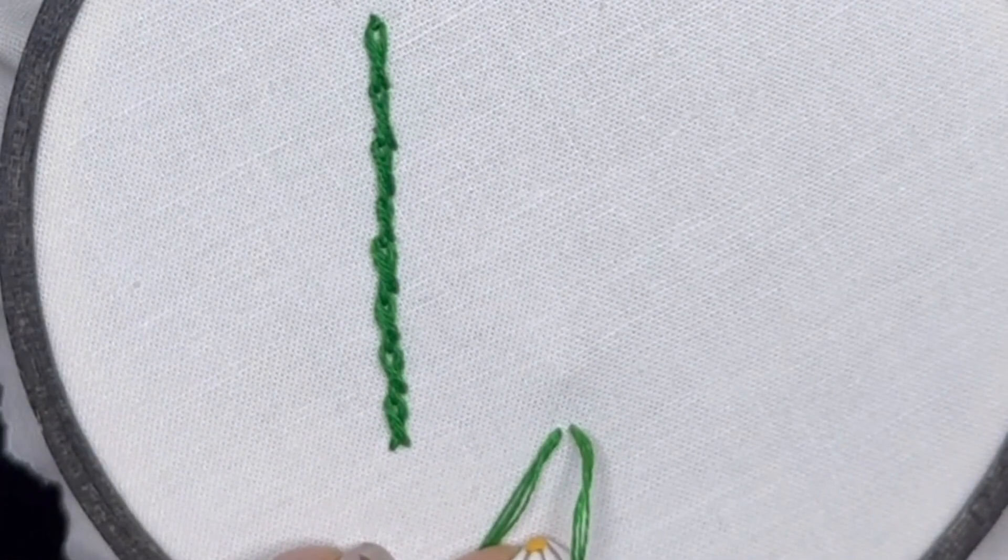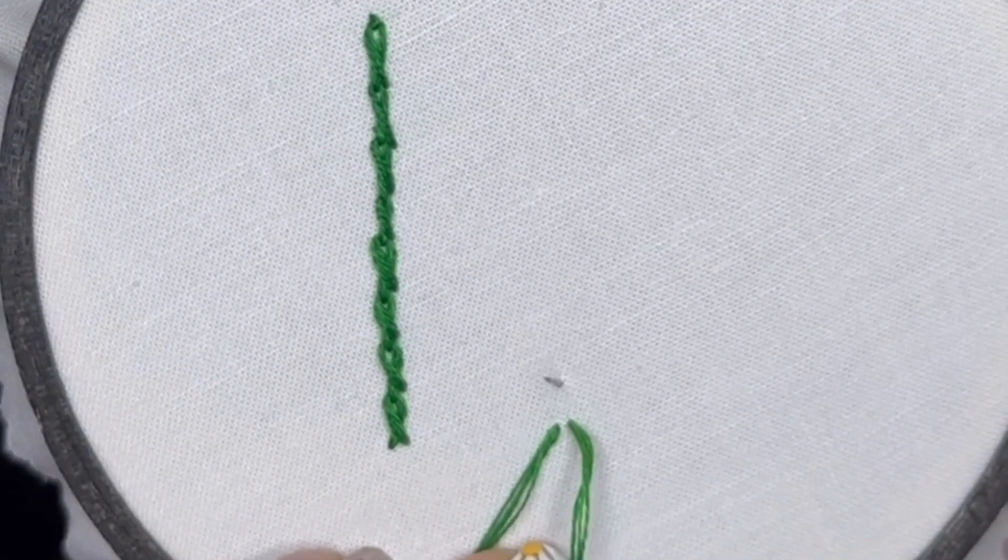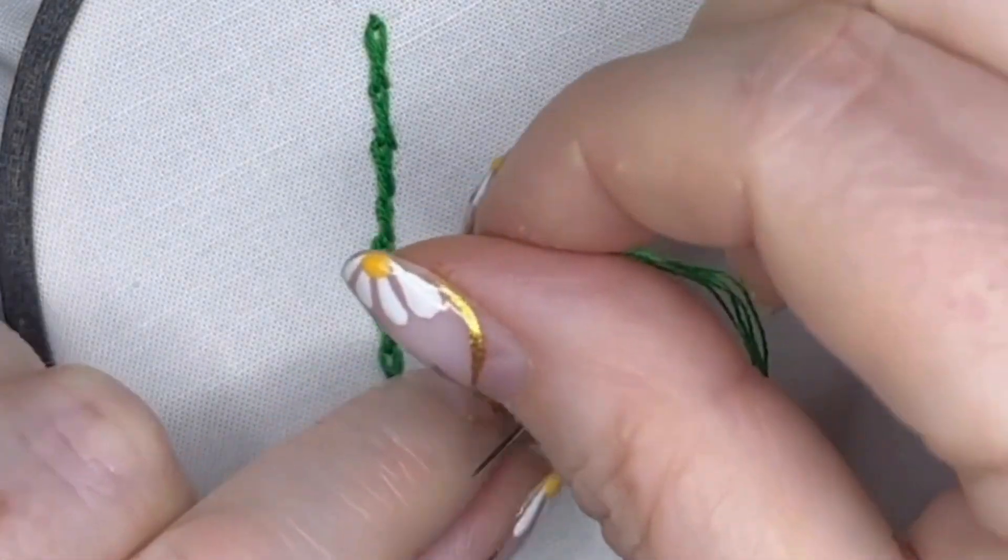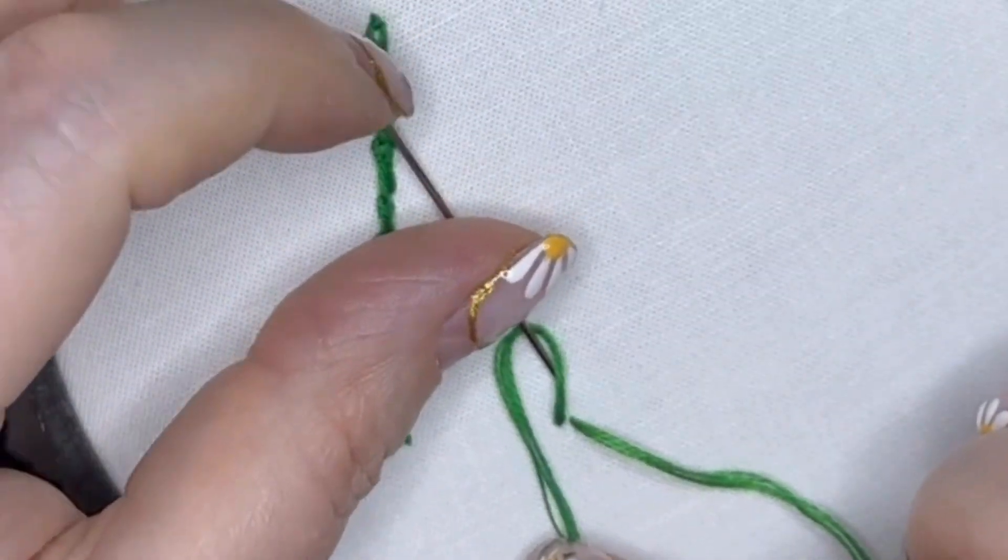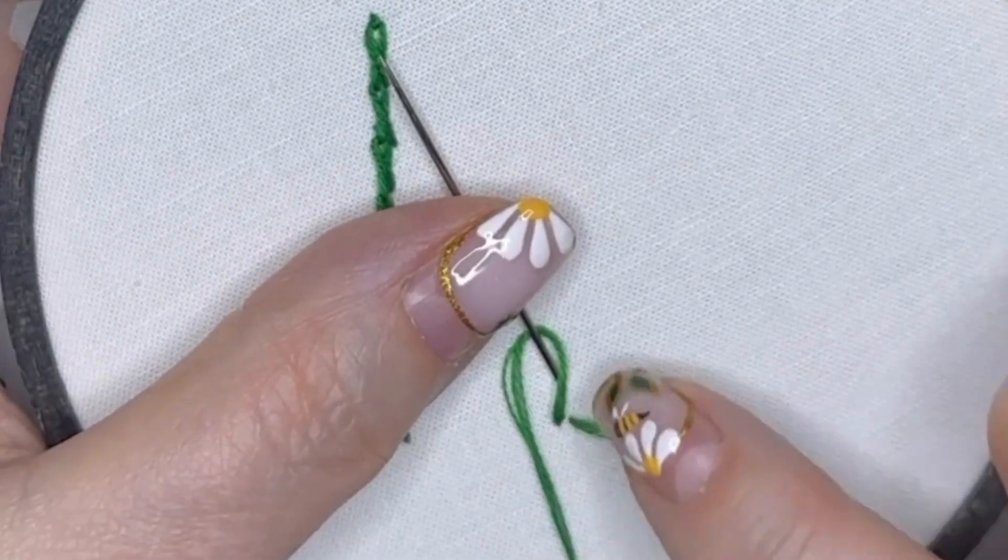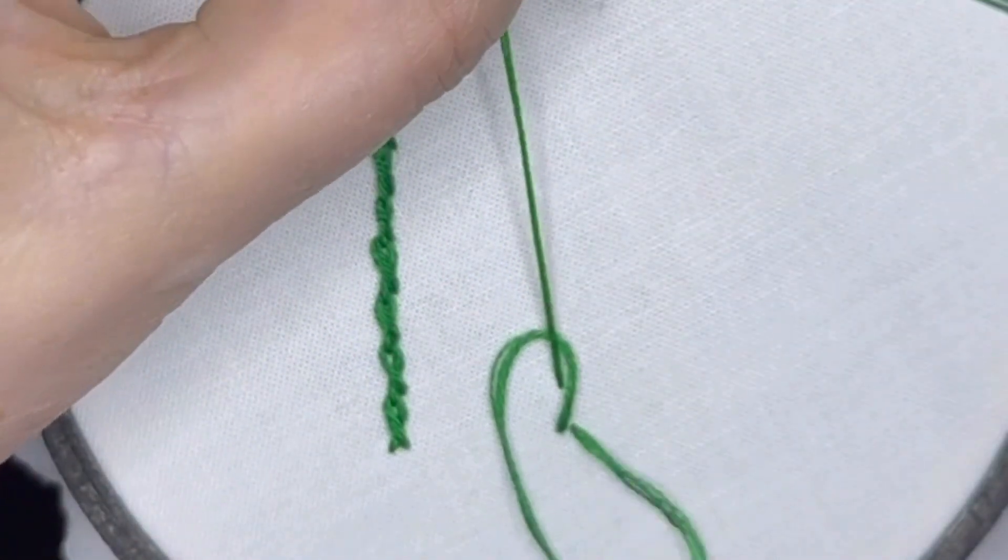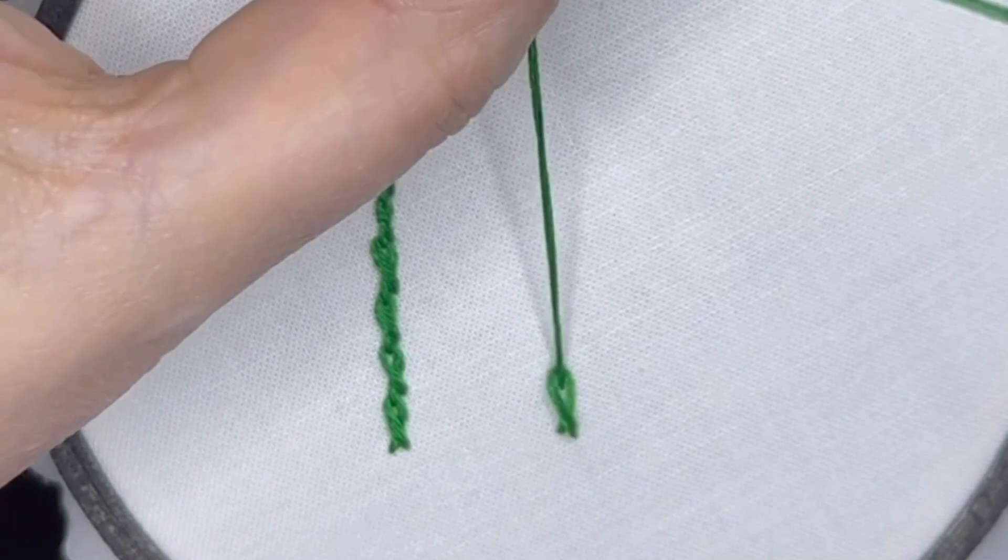Bring your needle back up through the fabric above that first entry point. Take hold of the thread on the left, that's the one that's come up through the fabric, and go around the needle from right to left. Pull your needle gently through and you'll see a twist.